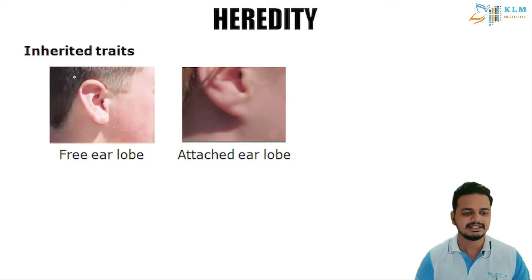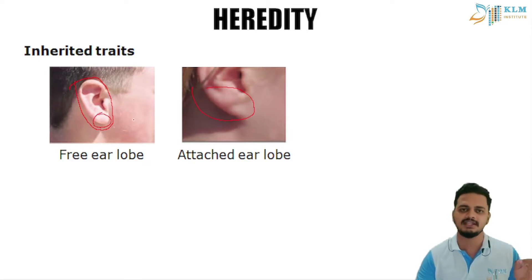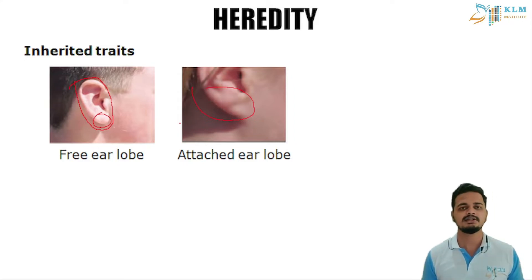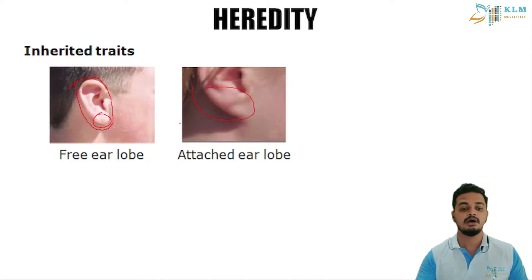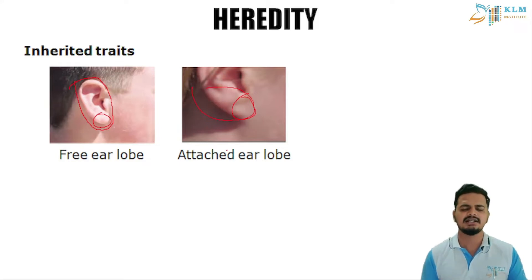One such example is the earlobe. There are two types of earlobes. You can see here — this part is free. I have this kind of ear. What might be the reason for this? This is because my mother and father both have free earlobes. Some people have attached earlobes. This is an inherited trait. And how your nose looks or how big your hands are — these are also examples of inherited traits.